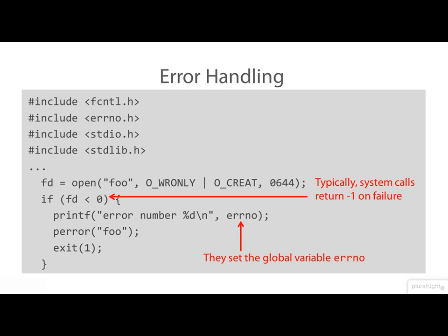If there is an error, there's a global integer variable called errno that's set to indicate the actual error. For example, the value 13 means 'permission denied' and the value 2 means 'no such file or directory'. You're not expected to remember or use the actual values though — there are symbolic constants that define them. The variable errno and the various symbolic constants are defined in the header file errno.h. Note that errno is only set if an error has occurred, so we need this two-step approach: check the return value for the system call, and then if it's negative, examine the value in errno.